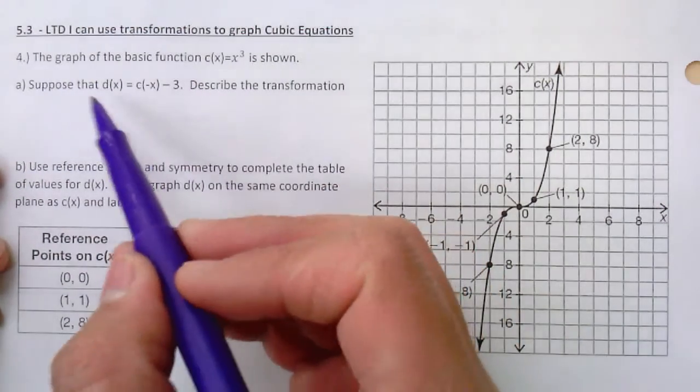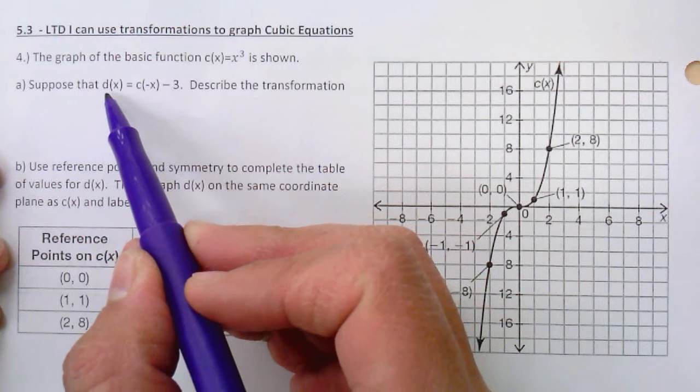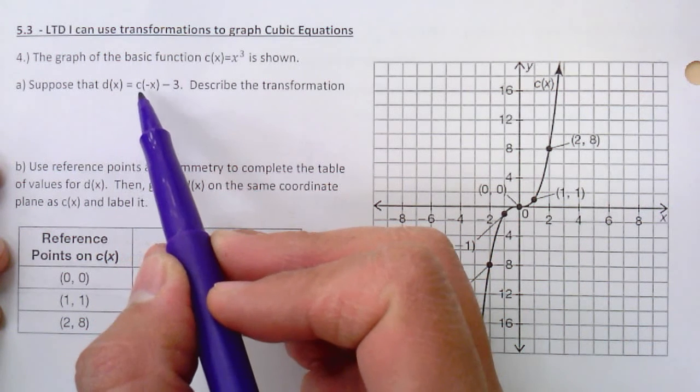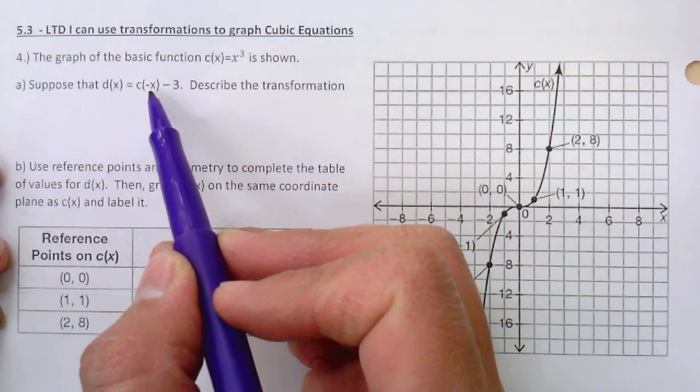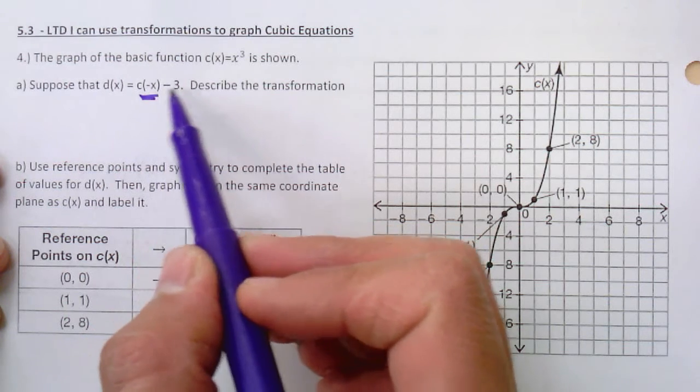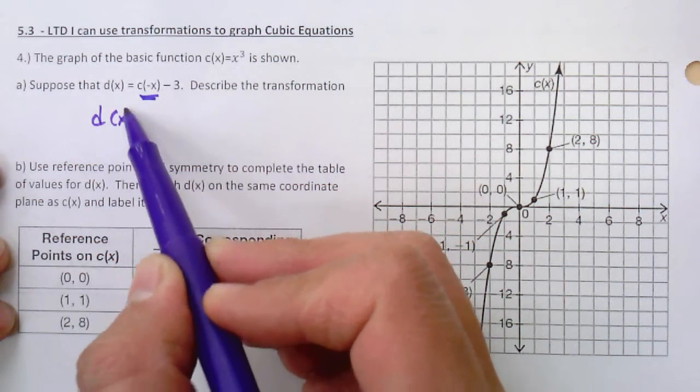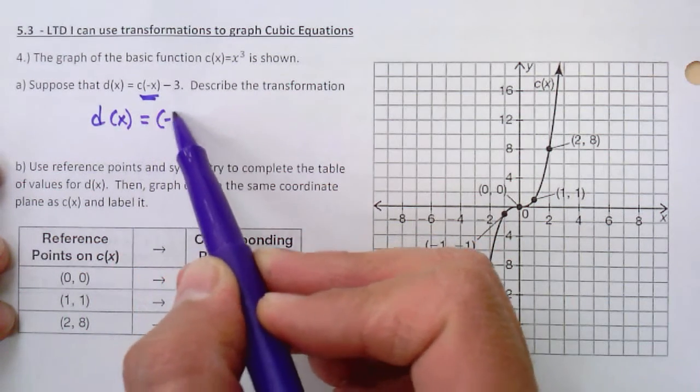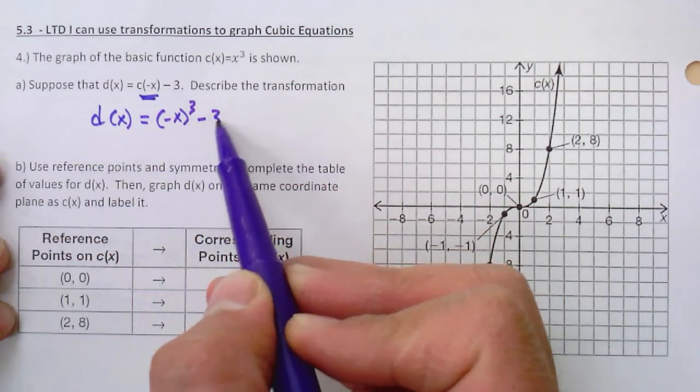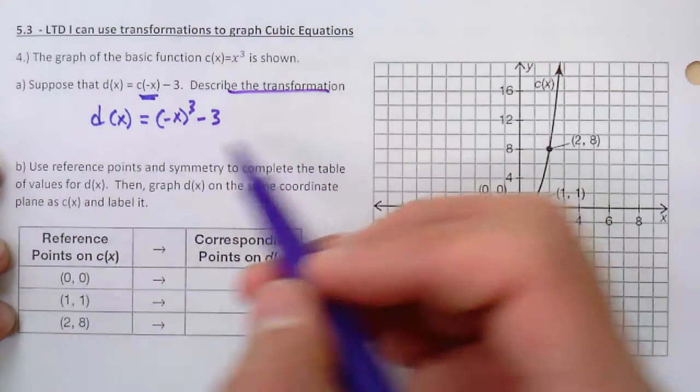So the first thing I want you guys to do is to rewrite this equation d of x. It's saying d of x is made from c of x, c of negative x minus 3. This notation means I'm going to plug in a negative x into the c of x equation. So the d of x equation looks like this. And then I want to describe the transformation.